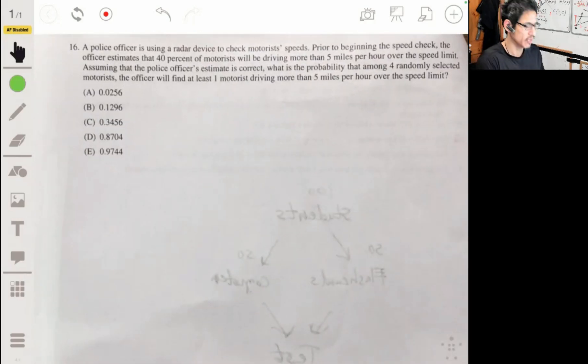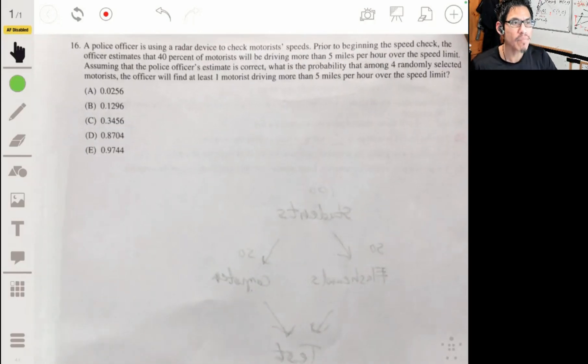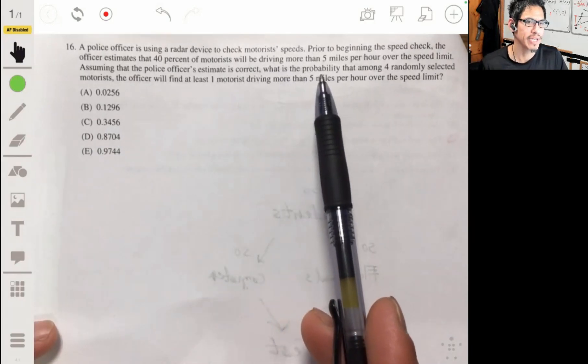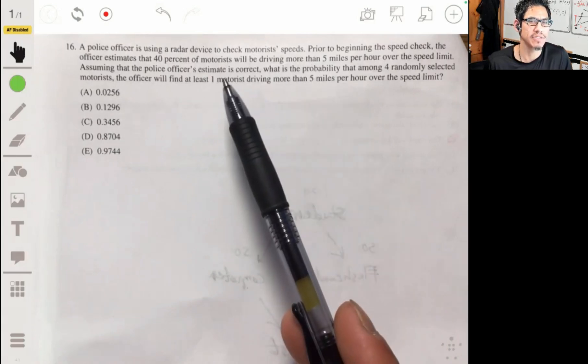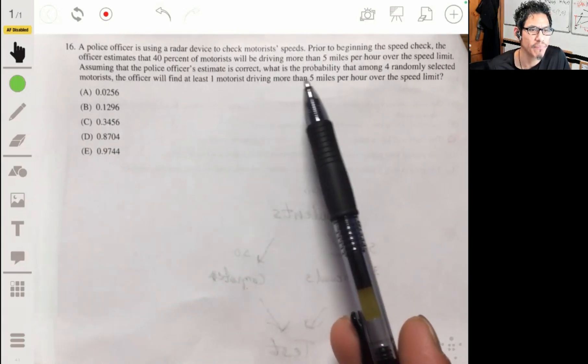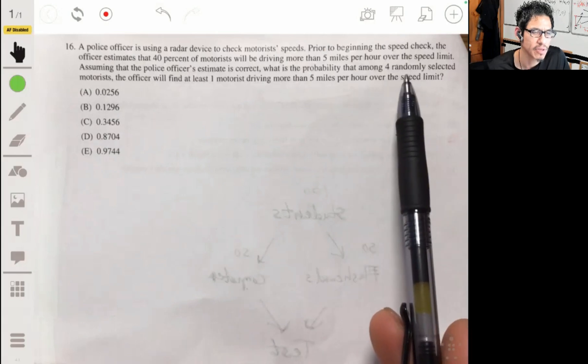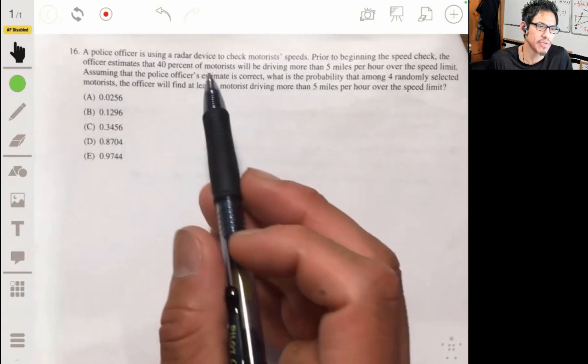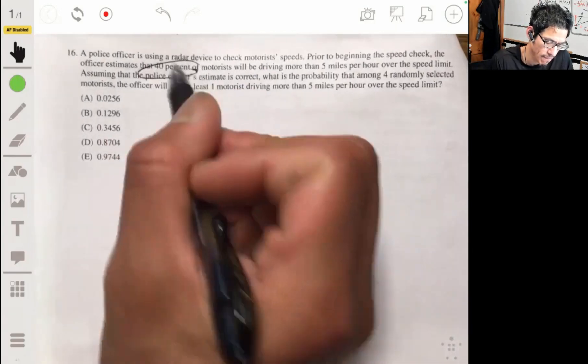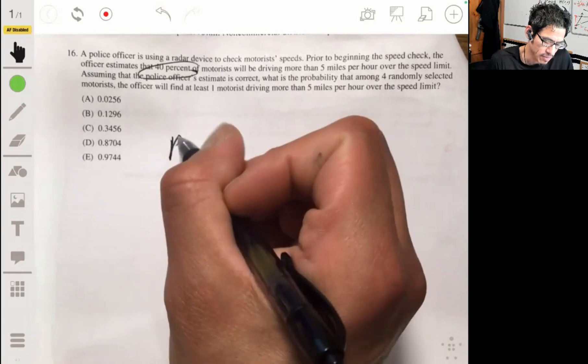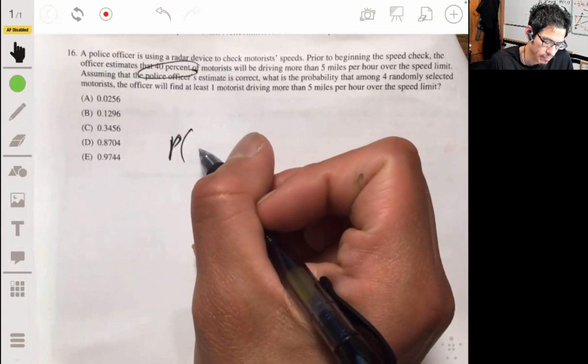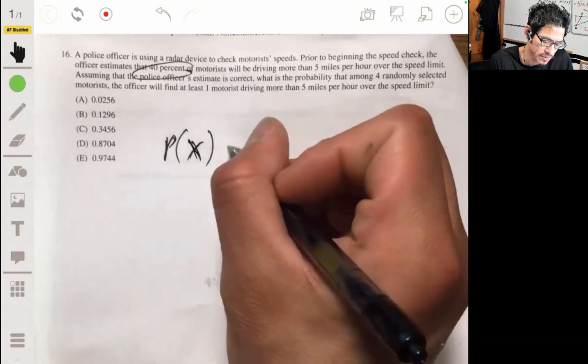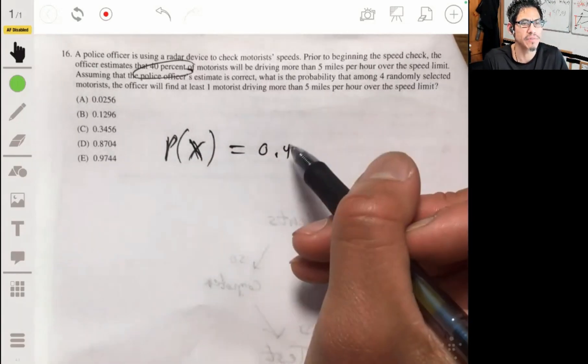So we have a police officer. Police officer is using a radar device to check motorist's speed. Prior to beginning that speed check, the officer estimates that 40% of motorists will be driving more than 5 miles per hour over the speed limit. So assuming that the police is correct with their 40%, let's just write this right now. The probability that X is driving 5 miles or more over the speed limit is 0.4. That's their assumption.